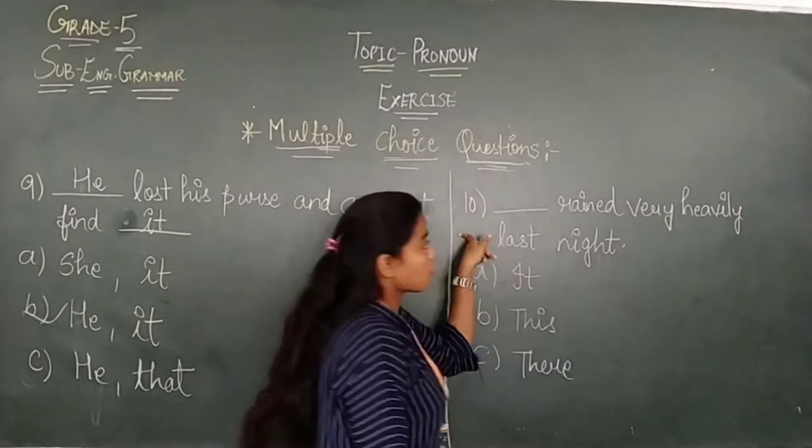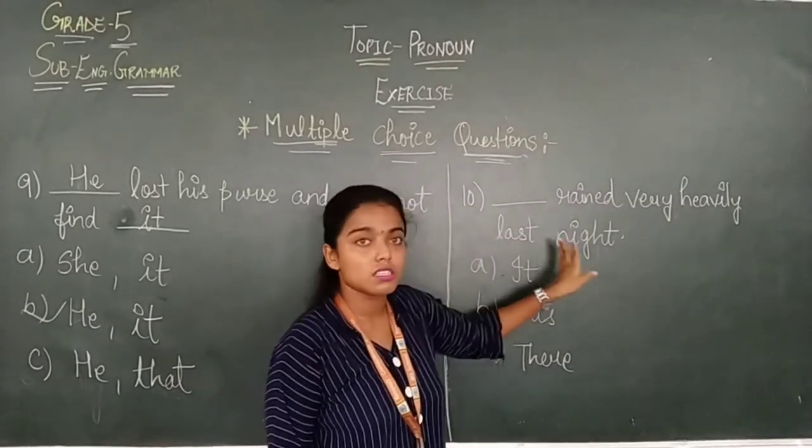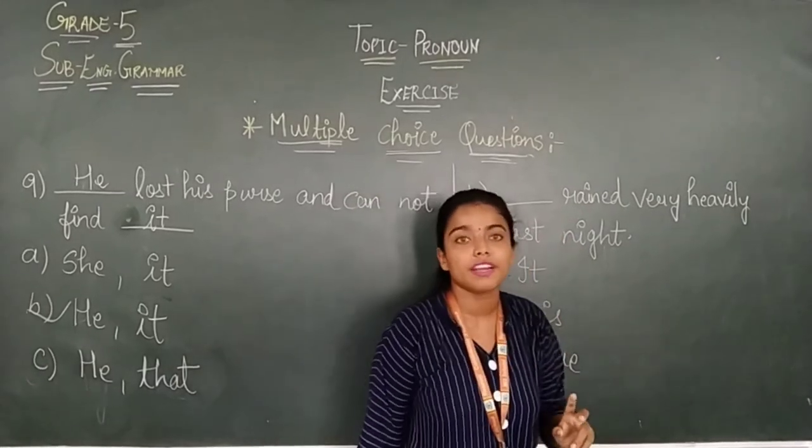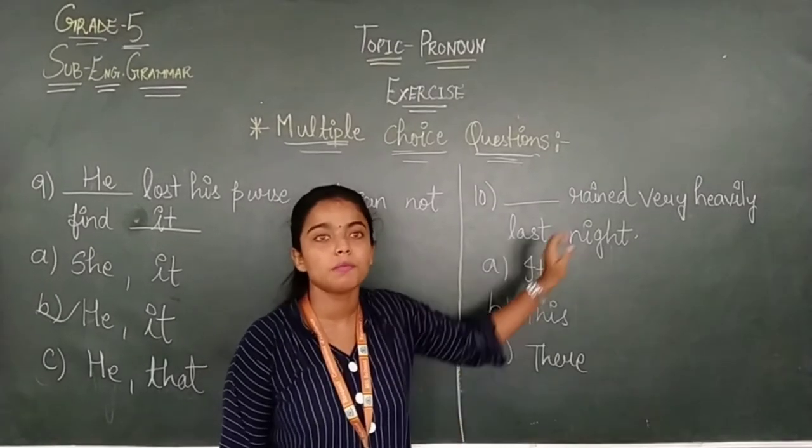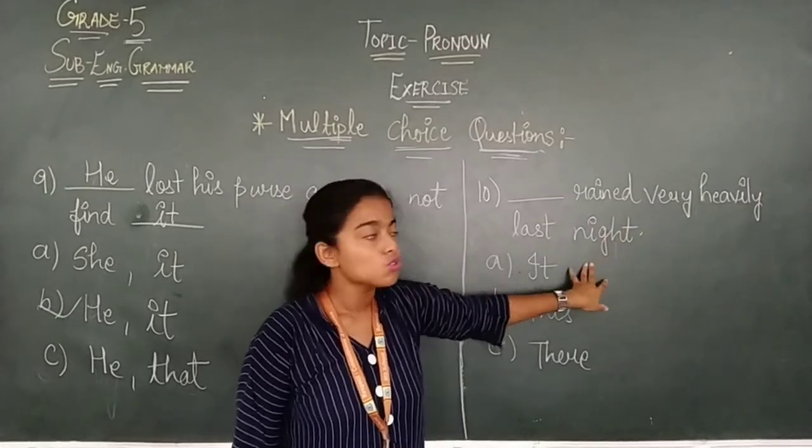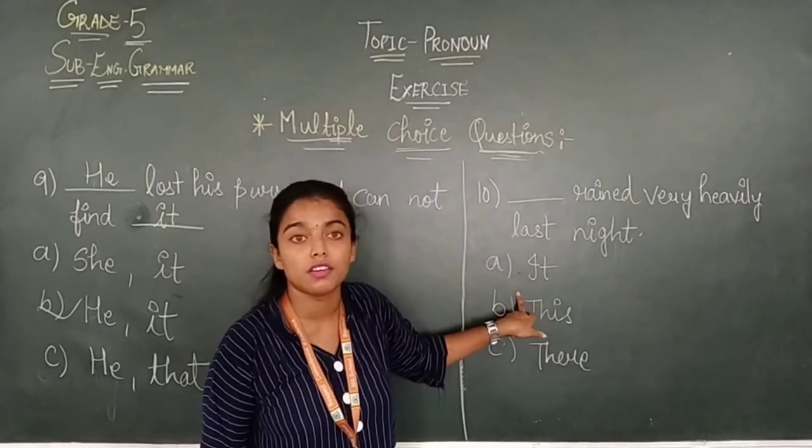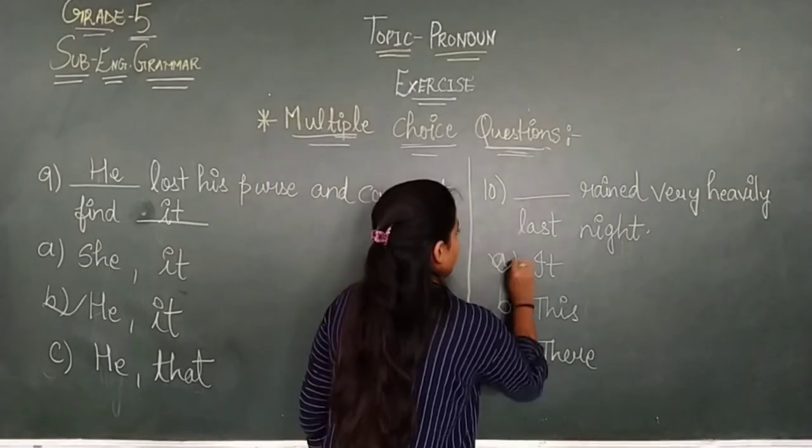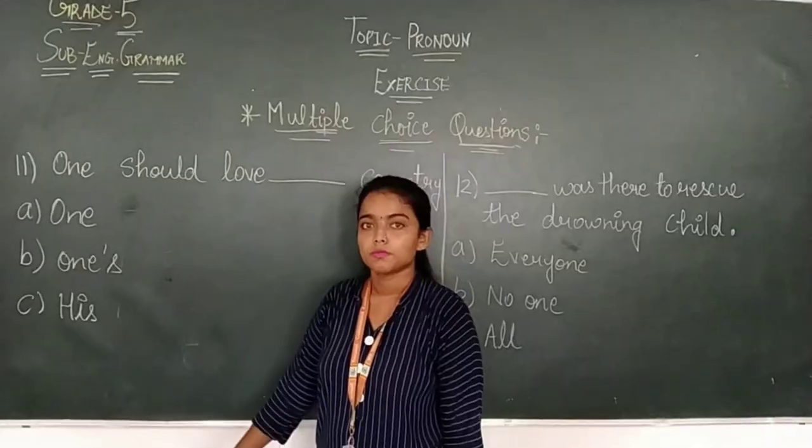Ten number. Dash rain very heavily last night. So, rain very heavily last night. It's not about any person. It's a natural calamity. So, we will use it. If it's a natural calamity or non-living things, which pronoun we will use? It.